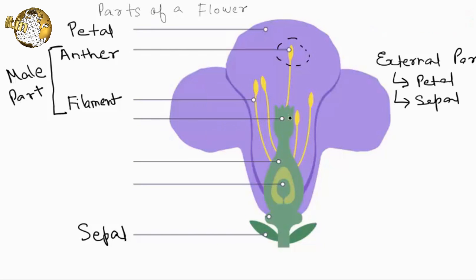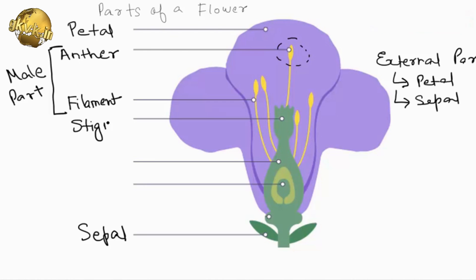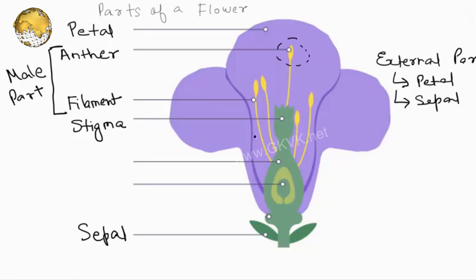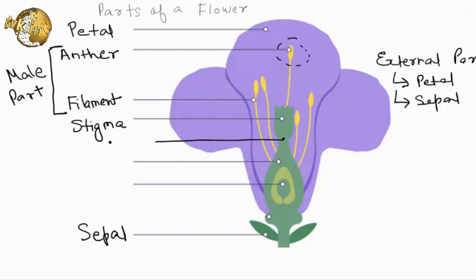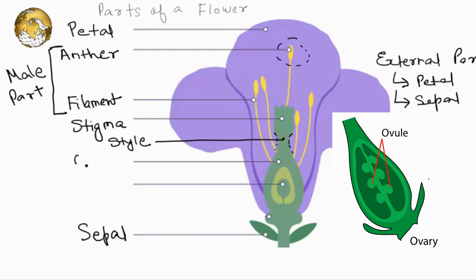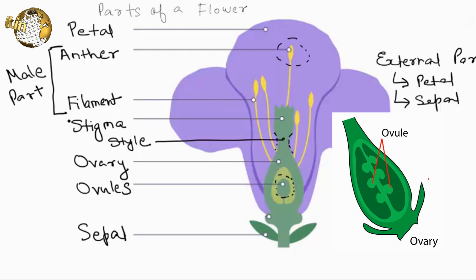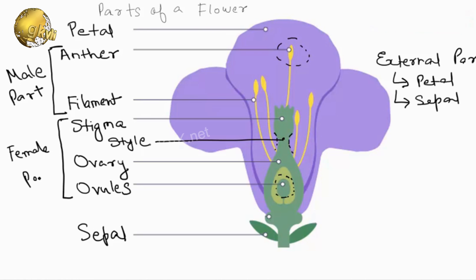The pistil is the collective term for the carpel. Each carpel, or the female part, includes a stigma, which receives pollen grains during fertilization; a style, a tube on the top of the ovary; and an ovary, where the ovules or the egg cells — the female reproductive cells — are produced. That was the illustration of the female reproductive parts of a flower.